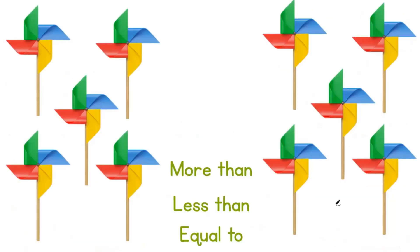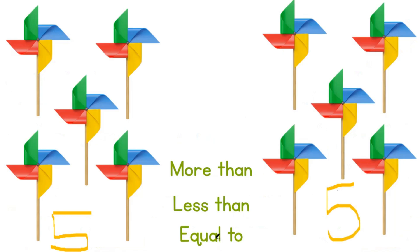Great job! And for our last example, we have wind fans. How many do we have on the left? We have 5. How many do we have on the right? We have 5. So is the left-hand side more than, less than, or equal to our right-hand side? It is equal to. And this is how we practice understanding conservation of numbers. Until next time, goodbye!